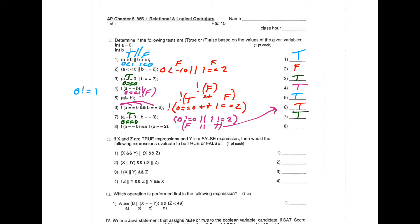Number 7: 0 equals equals 0 is true, so by short-circuit evaluation Java won't even look at the second part of the AND. Then: 0 equal to 0 is true, b equal to 2 is false, but NOT false becomes true. So we have true AND true, which is true, and then NOT true becomes false.